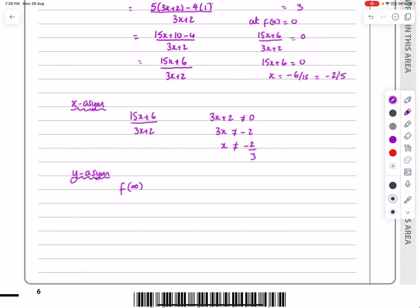For the y asymptote, if x is equal to infinity, it will tend towards 15 infinity plus 6 over 3 lots of infinity plus 2. If I've got 15 lots of infinity, adding 6 doesn't make any difference. Same with 3 infinity, the plus 2 doesn't make any difference. So I end up getting 15 infinity over 3 infinity. We can cancel them, 15 over 3, which means I get 5. That's the y asymptote.